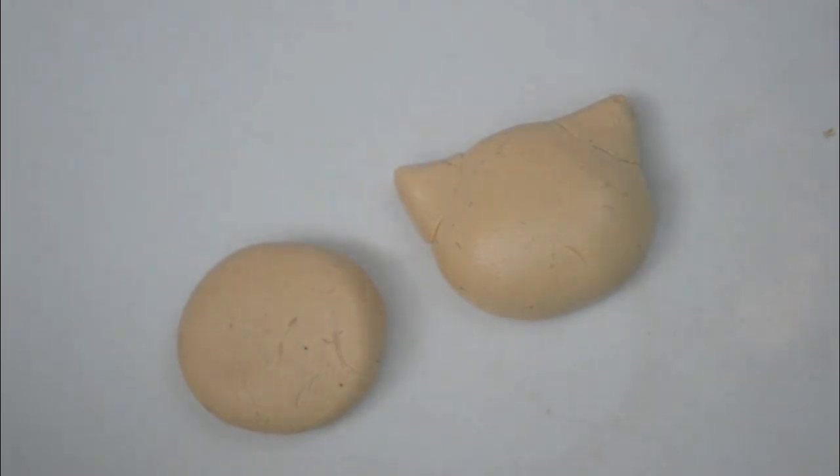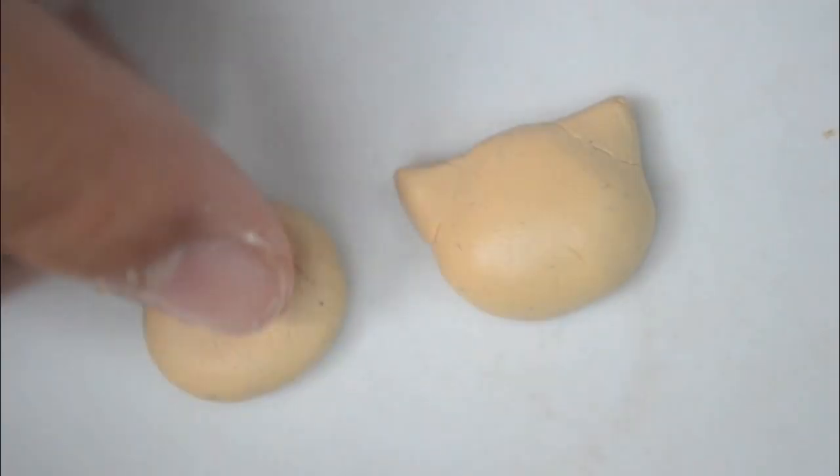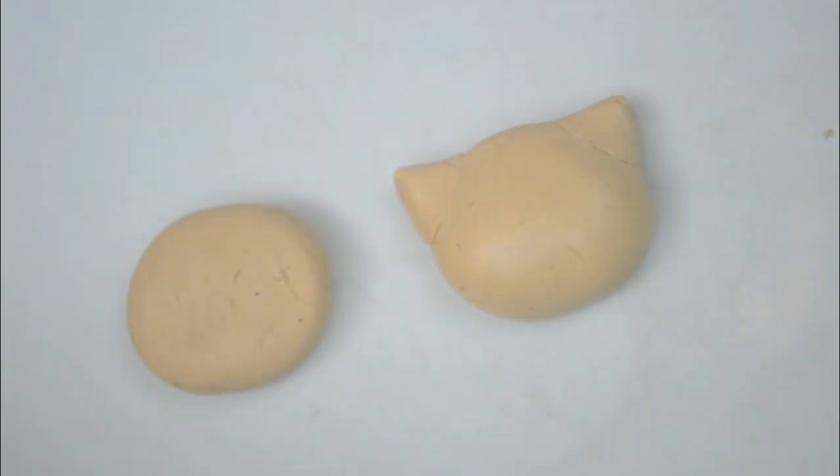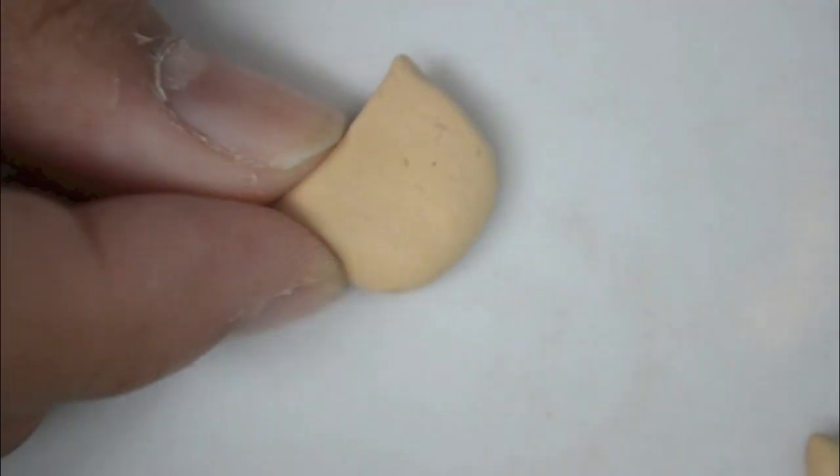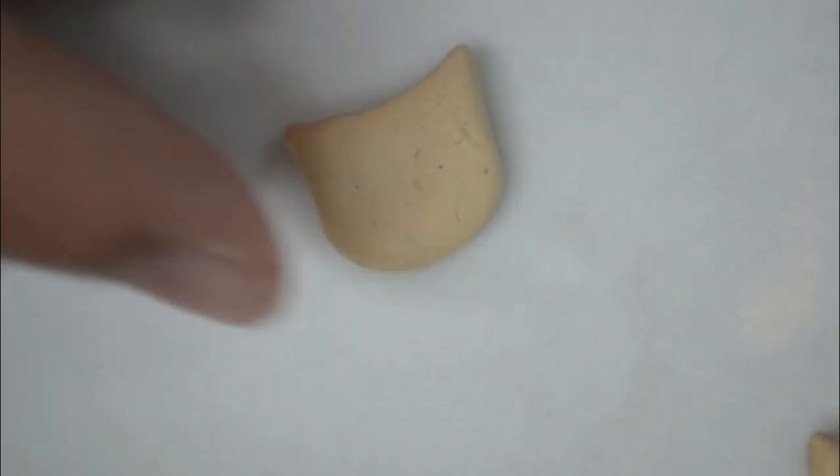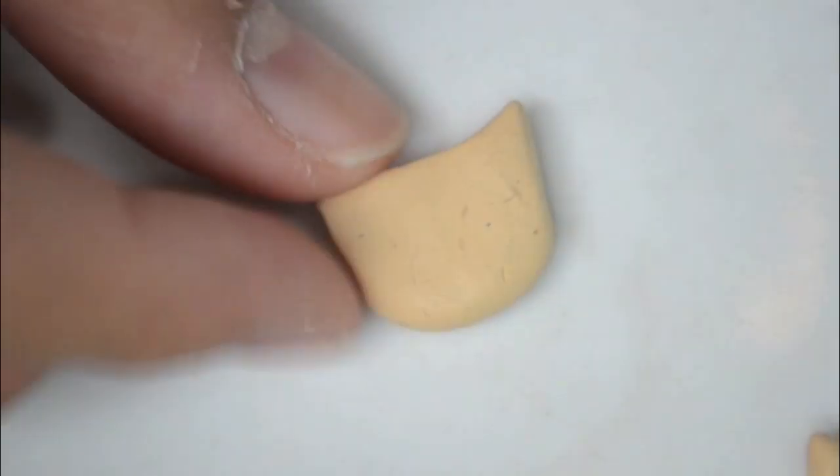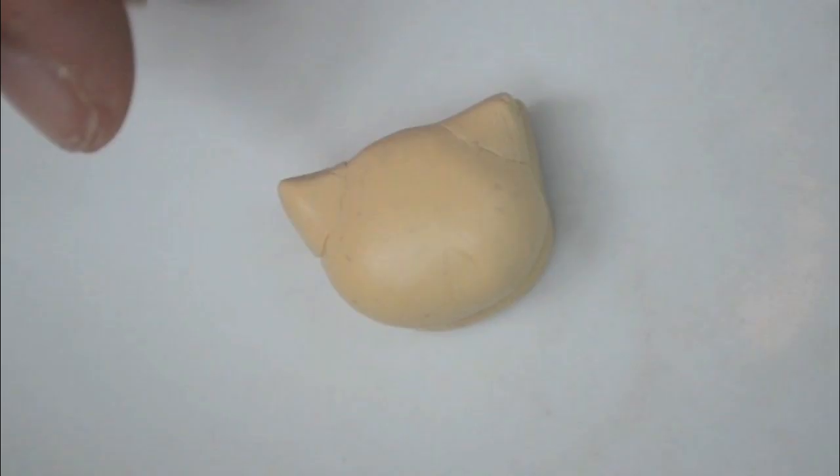Now we're going to do the bottom half of the bun, and you want it to be a little bit flatter than the top half. Here you don't have to be as careful. You can just pinch the top for ears. Just make sure they fit.